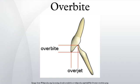Overbite medically refers to the extent of vertical overlap of the maxillary central incisors over the mandibular central incisors, measured relative to the incisal ridges. The term overbite does not refer to a specific condition, nor is it a form of malocclusion. Rather, an absent or excess overbite would be a malocclusion.